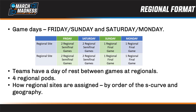Four regional pods will exist on the bracket, with the number one True Seeds pod paired with the number four True Seeds pod on the left side of the bracket, while the number two True Seeds pod and the number three True Seeds pod will be paired on the right side of the bracket. Teams are assigned to sites based on the bracketing principle that says: by order of the S-curve, the committee will assign each team to a regional and first and second round site, by taking into account distance from site, mode of transportation, and accessibility by fans.